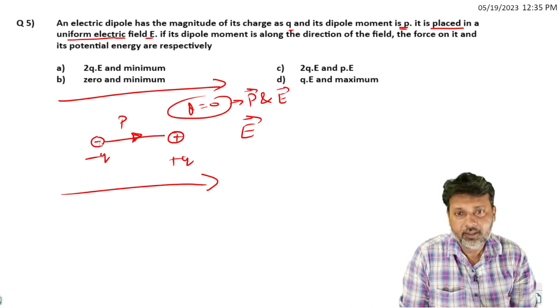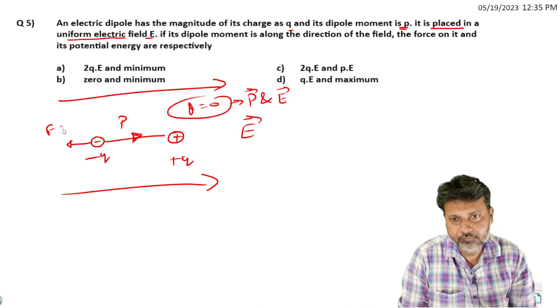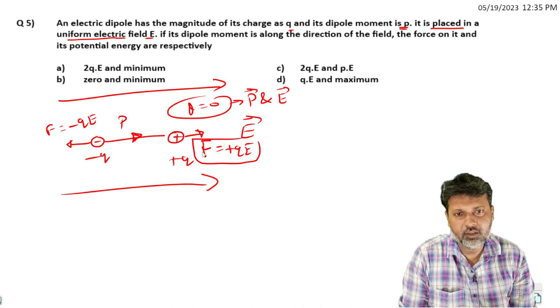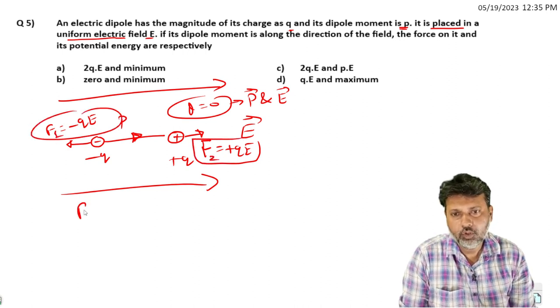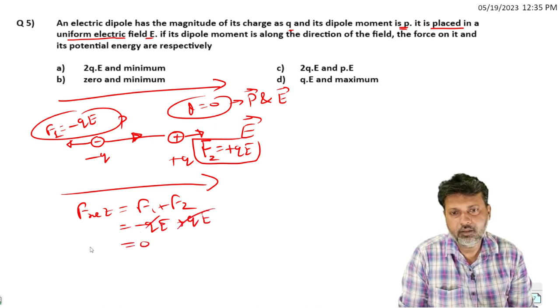In the electric field direction, force on negative charge will be -q into E in this direction, and on positive charge it will be +q into E. The net force will be +qE - qE, which equals zero. So net force on the dipole is zero, meaning no translational motion.